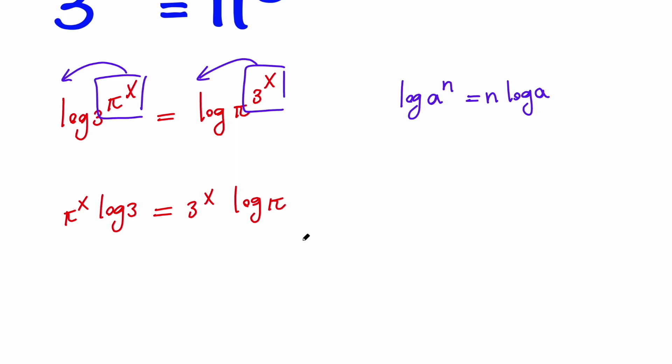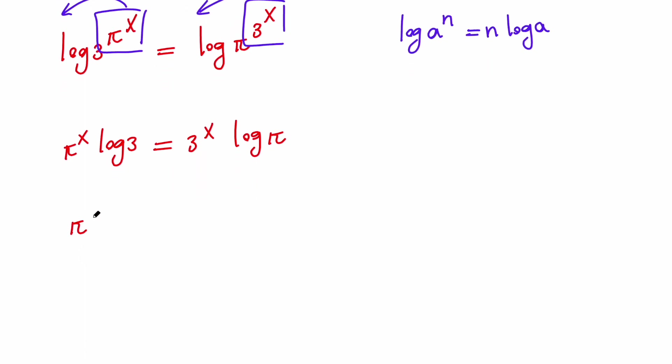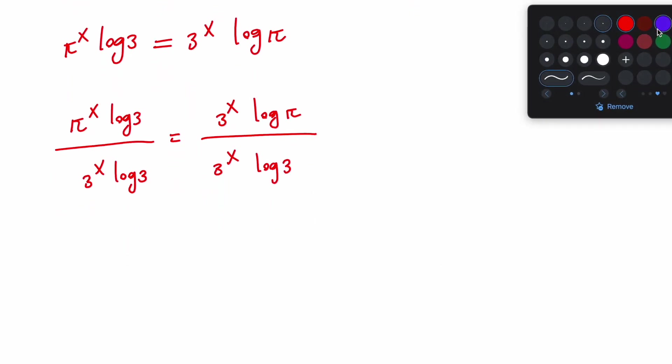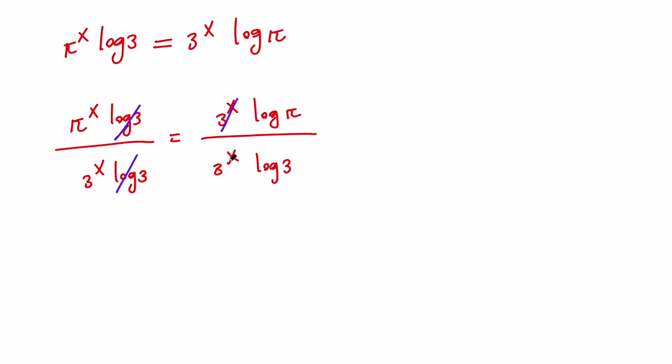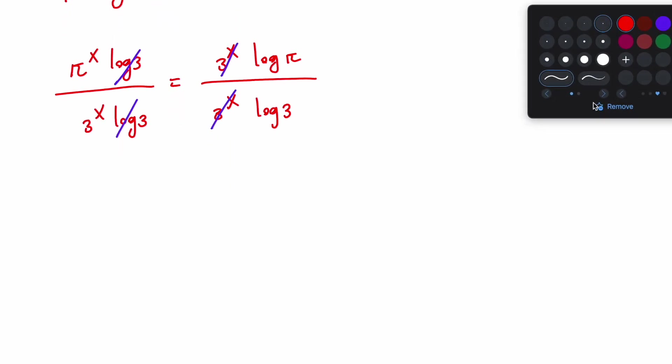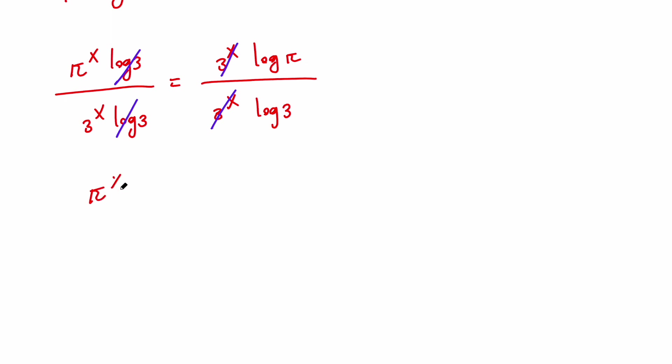Next, let's go ahead and divide both sides by 3 to the x times log 3. So we're going to have pi to the x times log 3 divided by 3 to the x times log 3. And we do the same thing on the right-hand side. And then we can go ahead and cancel this with this and this one with this one. So we get pi to the x over 3 to the x equals log pi over log 3.